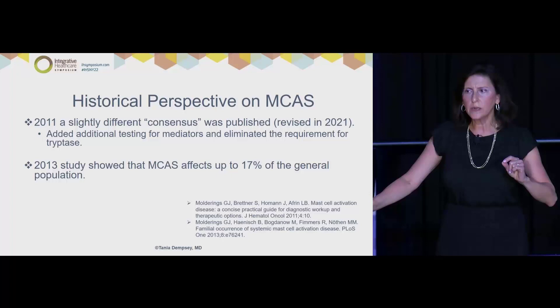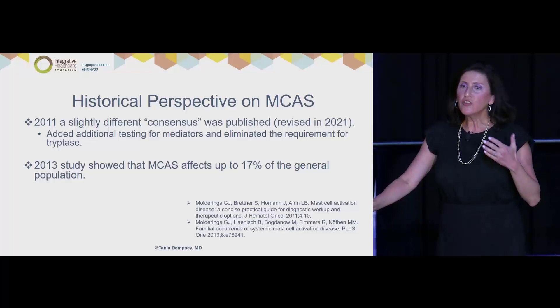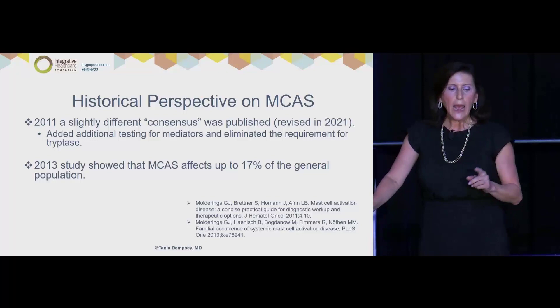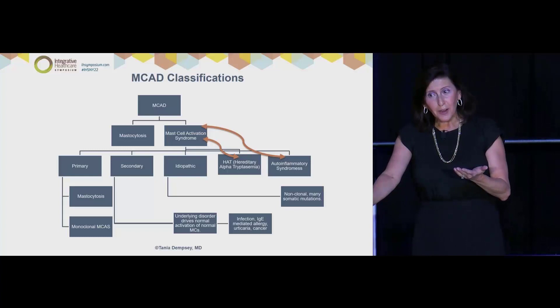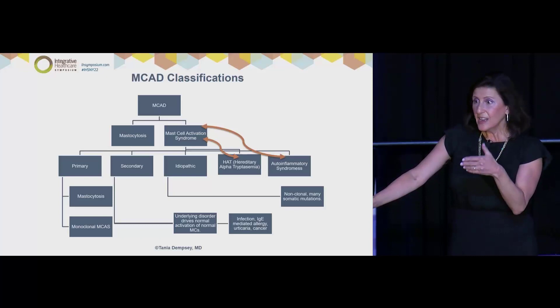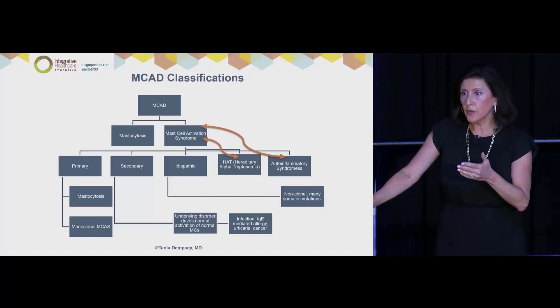In our population of patients, I would argue it's half or more — in my practice it's 95%. Many are undiagnosed and not recognized. The classification system goes: at the top, mast cell activation disease; under that, mastocytosis or cancer of the mast cell; and then MCAS with various forms. I'm also recognizing more and more hereditary alpha tryptasemia (HAT), which has a genetic test — patients have high levels of tryptase but not mastocytosis. And autoinflammatory syndromes may also be associated with or a driver for MCAS.